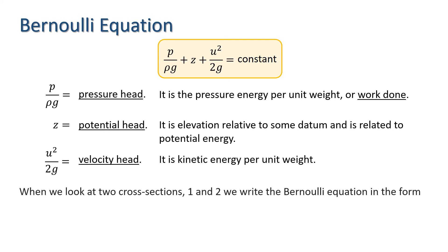When we look at two cross sections, 1 and 2, we write the Bernoulli equation in the form shown here.